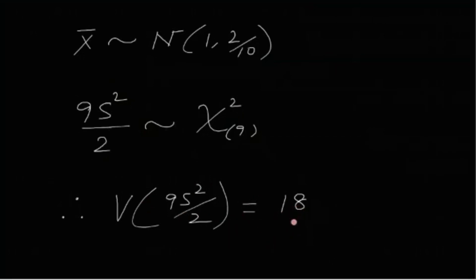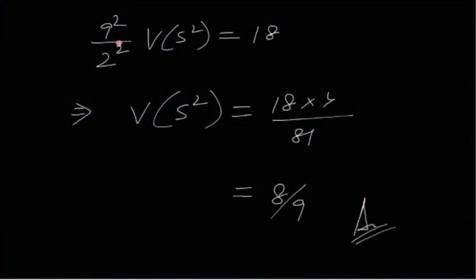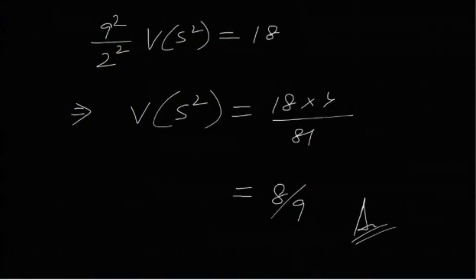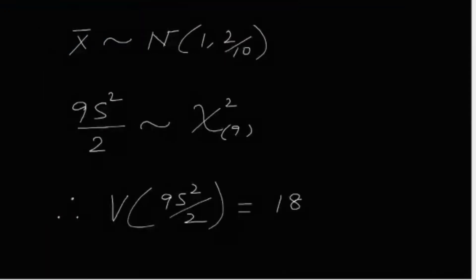We have Var(9S²/2) = 18, but we want Var(S²). Since the constant 9/2 gets squared out, we have (9/2)²·Var(S²) = 18, which gives Var(S²) = 18·(4/81) = 8/9. So the variance of S² is 8/9 — it was a very easy problem.